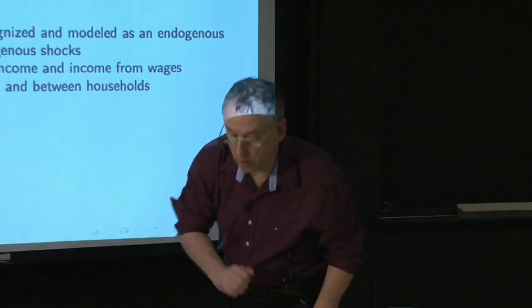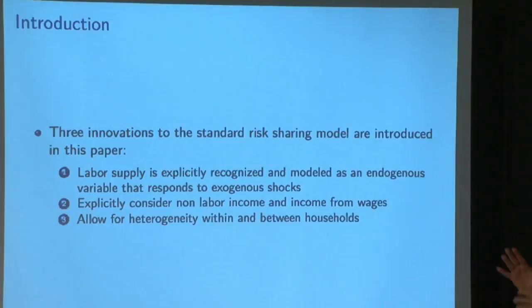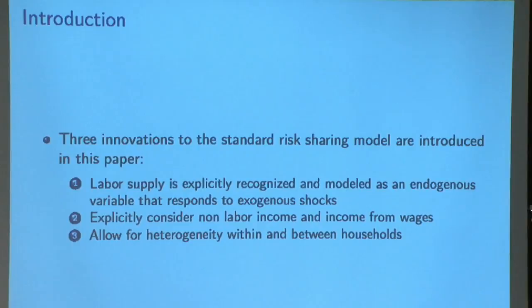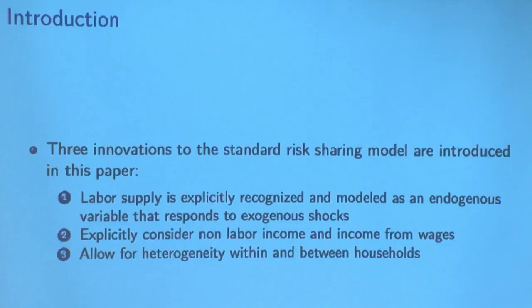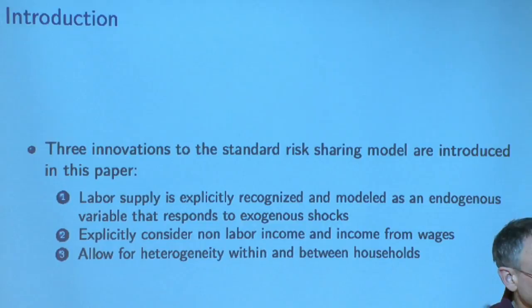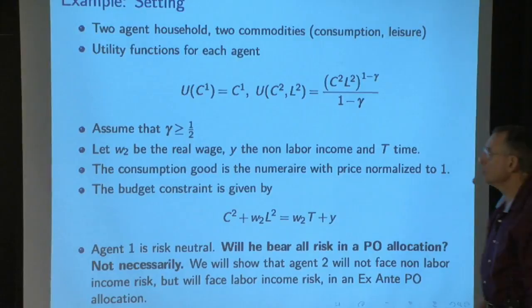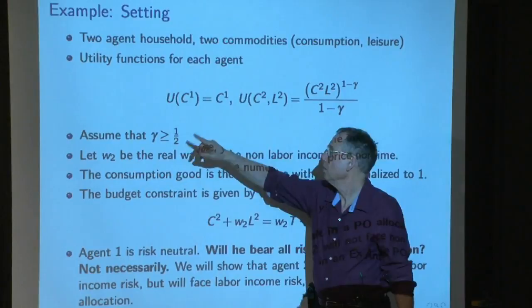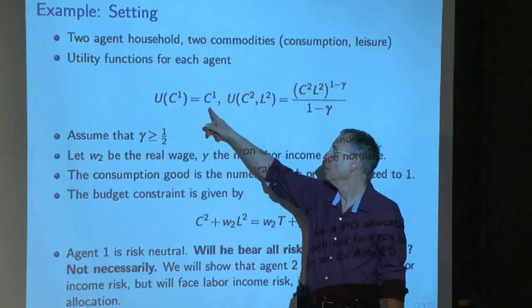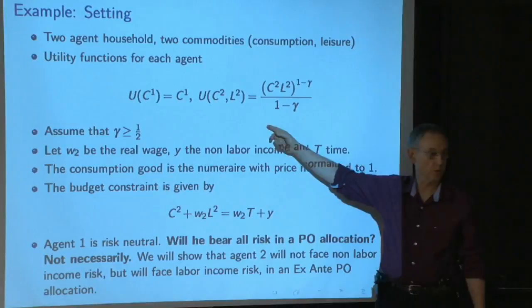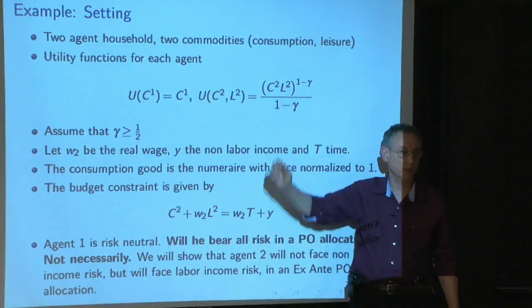We have non-labor income — like the Y moving around we've had before — but we also have income from wages, and hours are endogenous. Labor is not supplied inelastically. We're going to allow for heterogeneity among individuals within a household and heterogeneity across households. Let me lead off with an example. Say you have two people or two households: one is risk neutral, the other risk averse.